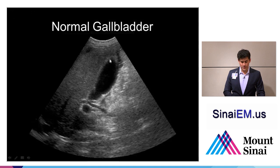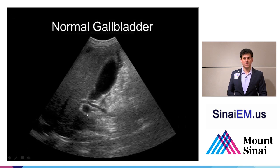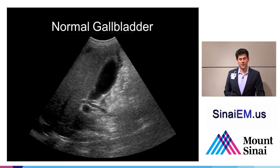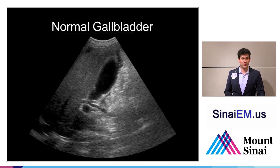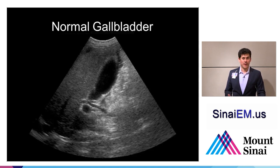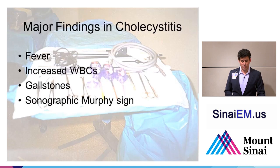Here's another normal gallbladder demonstrated longitudinally with a portal vein below it. There can sometimes be confusion with respect to terminology — long and short axis, transverse, longitudinal. When people speak about the gallbladder, they're typically speaking about the orientation of the gallbladder itself. A long view of the gallbladder is one where you can see the fundus all the way up to the neck down into the portal vein. A short view is basically a transverse cut through the gallbladder.